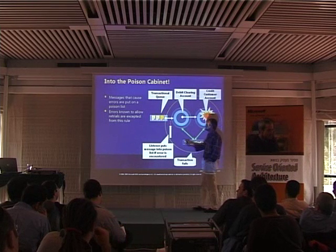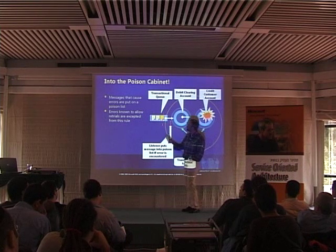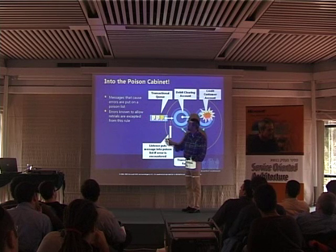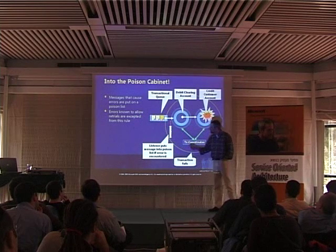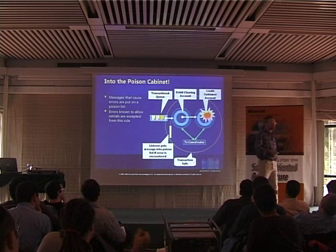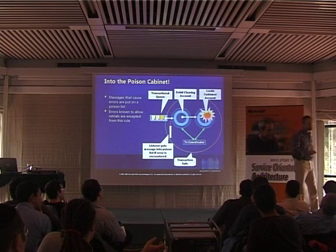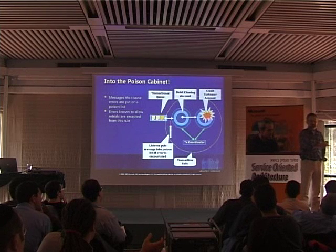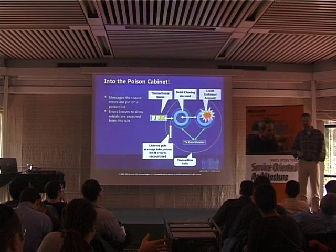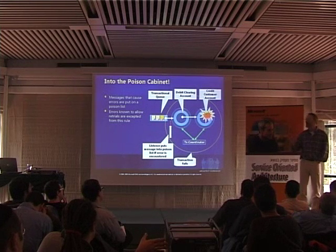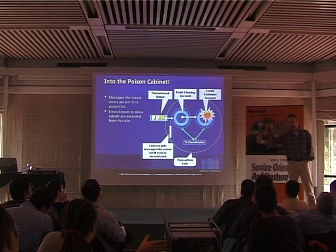So if a message occurs next time I read it — this message or another message coming in — I will first look into the poison list and find out: did I already process a message like this? If I did, I will refuse processing and just drop that message and stop my transaction. If it's not on the poison list, I try.